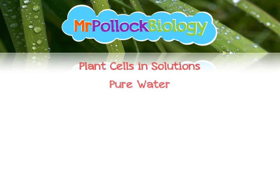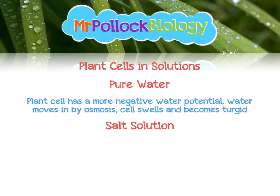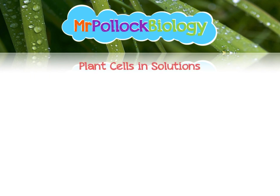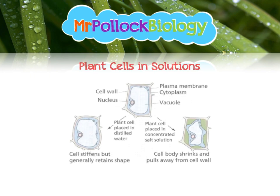Let's look at plant cells next — pure water and salt solution as before. Plant cells have a cell wall, which allows them to resist osmotic changes a little bit easier. A plant cell has a more negative water potential than pure water, so water will still move in, but this time the cell will swell and become turgid and swollen because the cell wall stops the bursting. In salt solution, the plant cell will still have a less negative water potential than the solution — water will move out by osmosis and the cell will shrivel and become flaccid. Here's a nice diagram illustrating this.